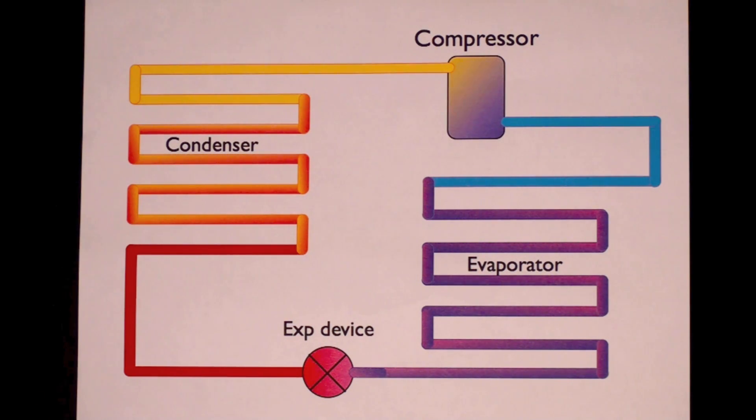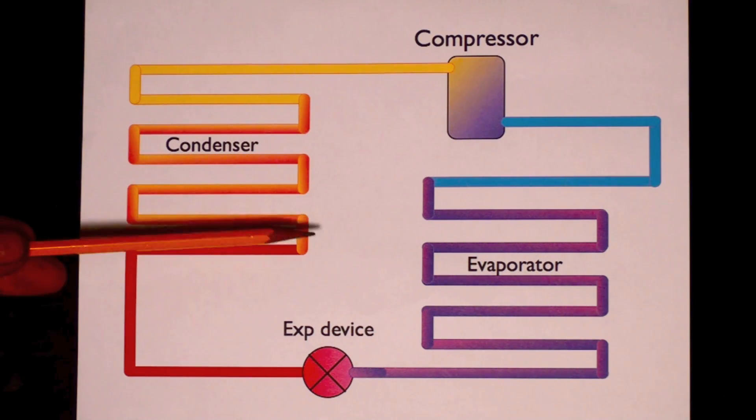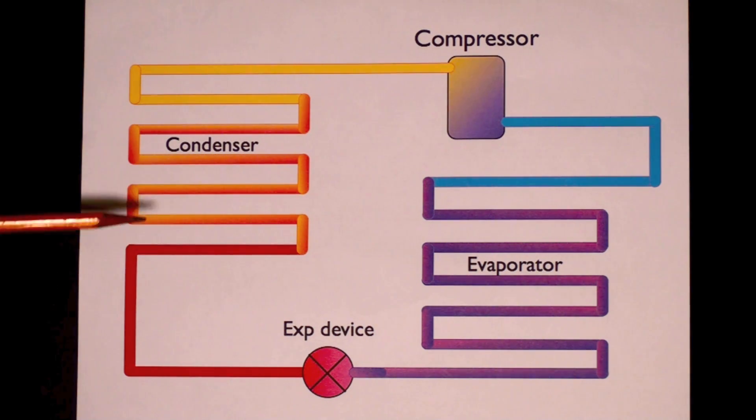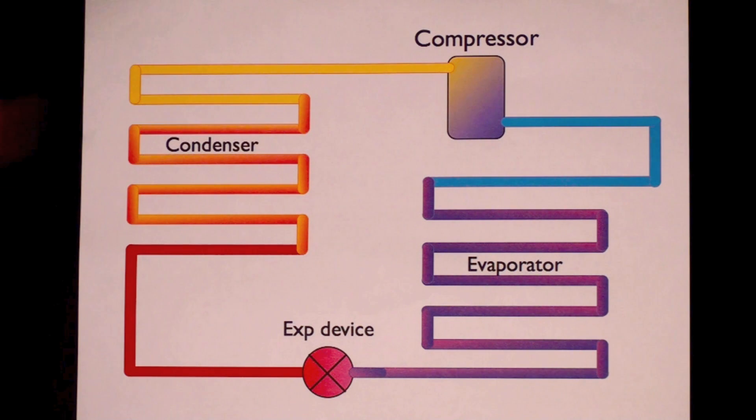Now when it becomes all liquid, remember up here we were a saturated mix. So there was gas and liquid refrigerant and it was condensing. So it's going to condense at the same temperature. Down here it's all liquid and so it will subcool. That means it's going to get cooler than the condensing temperature.